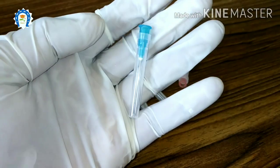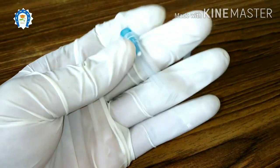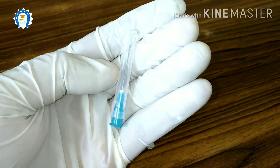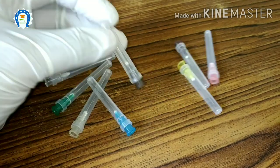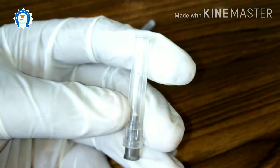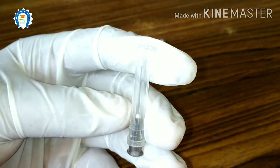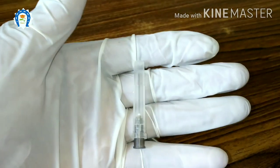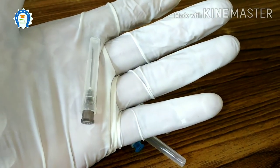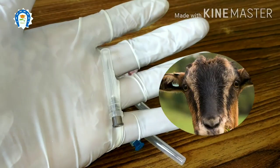This is the 23 gauge needle. We can use this for bigger dogs and kids. This is the 22 gauge needle that is black in color. We commonly use this in our small animal practice as well as large animal practice. This can be used for blood collection in dogs, goats, and kids, and intramuscular injections can also be given to dogs.